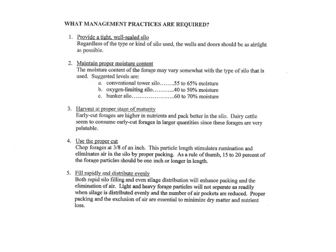Here's another list about silage practices. You've got to get your silo ready — make sure it's sealed, with no air leaks, or covered with plastic. Make sure you're at the proper moisture and harvest at the proper stage. Cut to the right theoretical length so we get a good pack. Fill rapidly and distribute evenly — if you've got an upright silo, make sure the distributor is working properly. Then pack adequately and cover as quickly as you can.